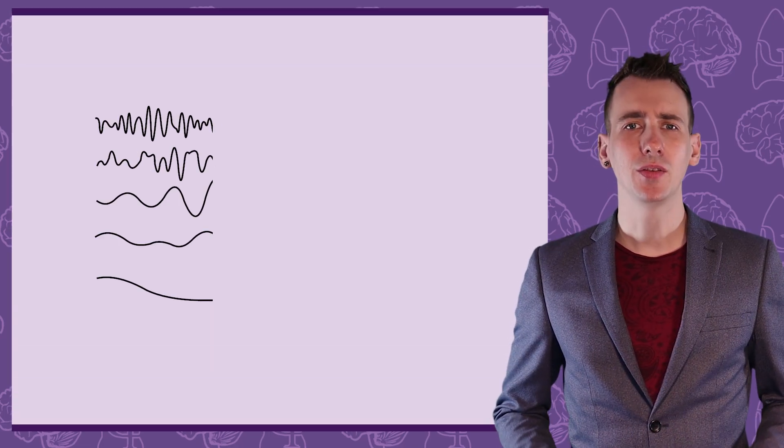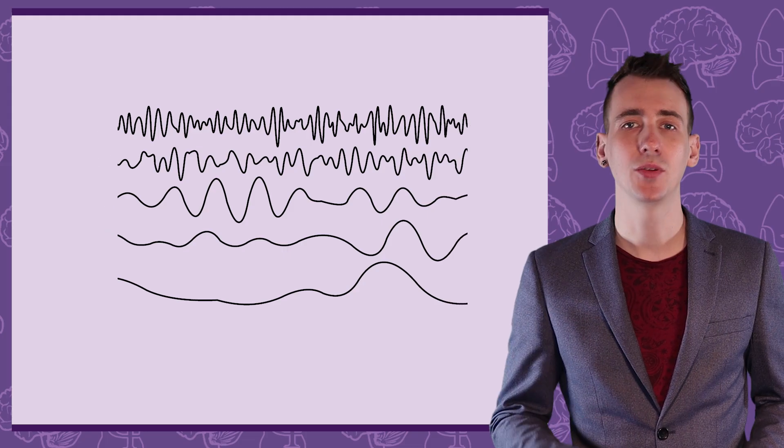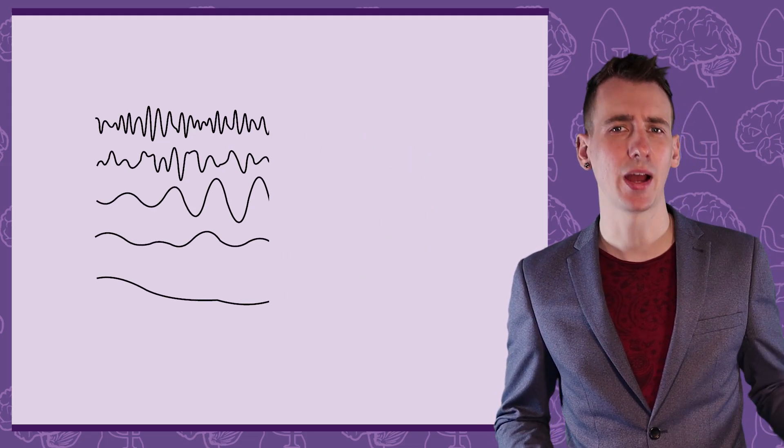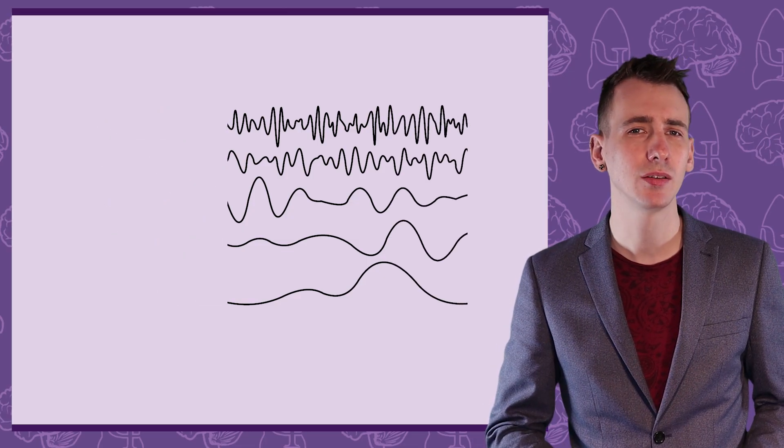Your brain has a series of distinctive brainwave patterns that can be observed by an electroencephalogram. While you sleep, these brainwaves will pass through a series of patterns, and these then repeat around every 90 minutes. But what do these patterns actually mean about what's happening in your brain?